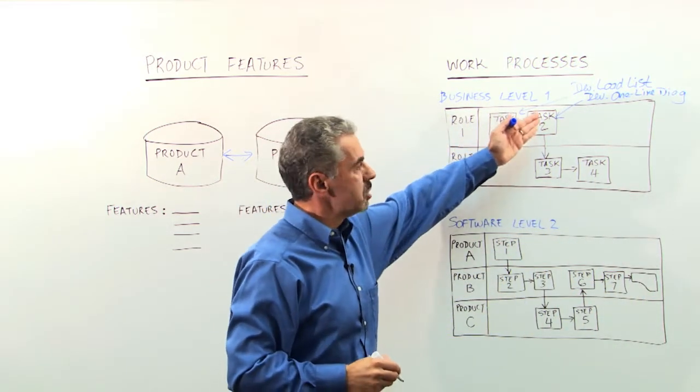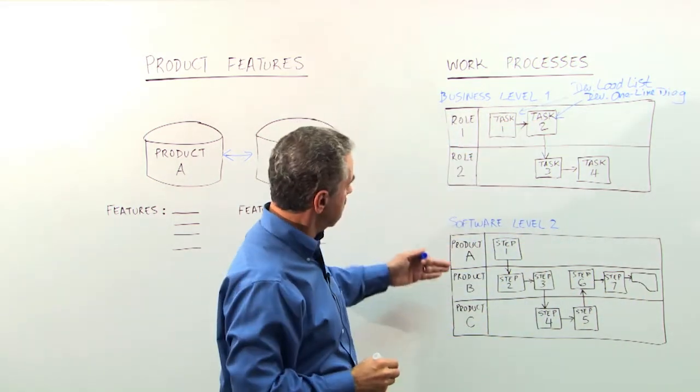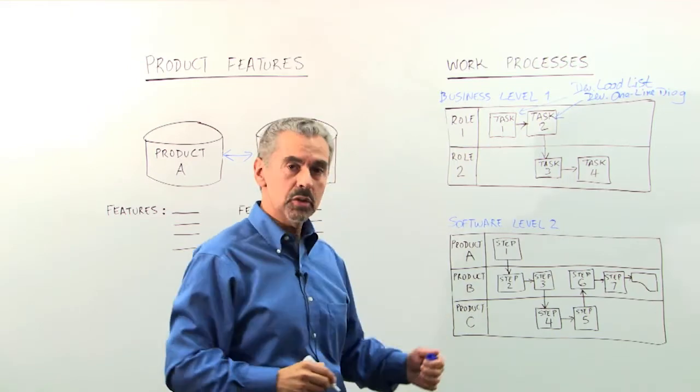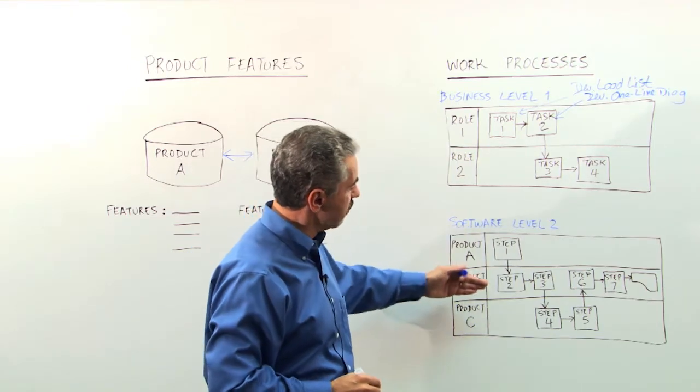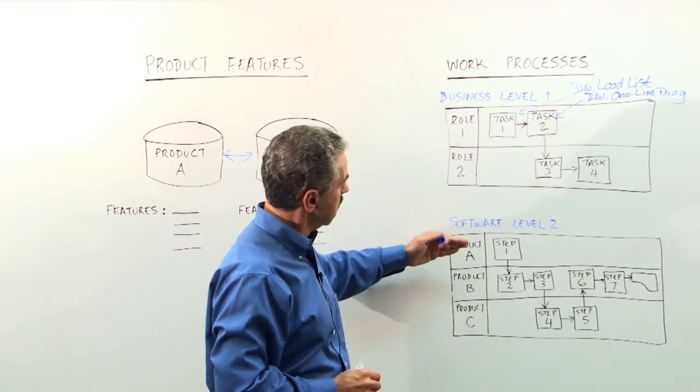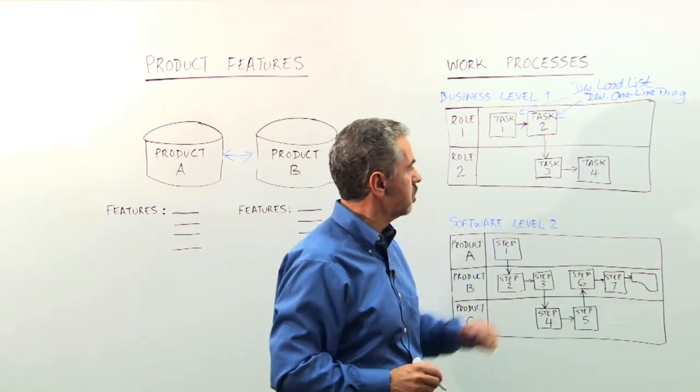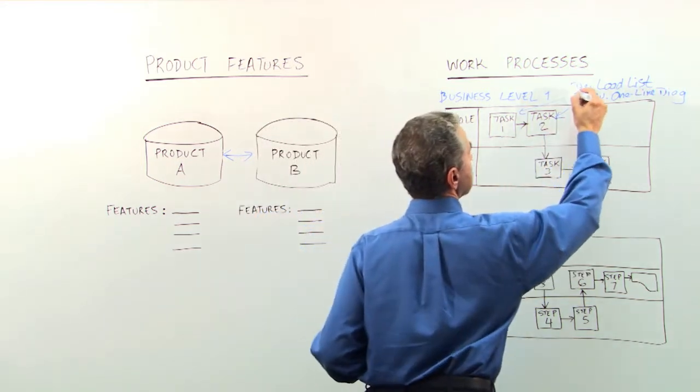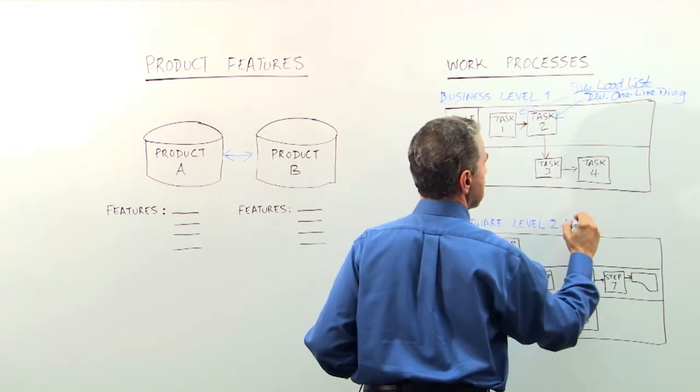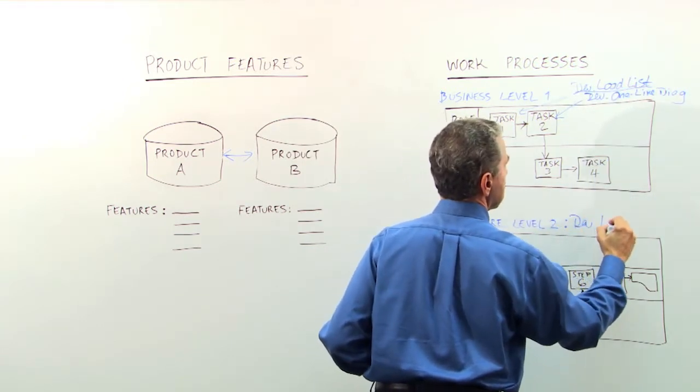So now we take each major task, or deliverable, and describe in this level two diagram, how you use the various products in cooperation, in collaboration, in order to create your deliverable. So for instance, we could call this one develop load list.